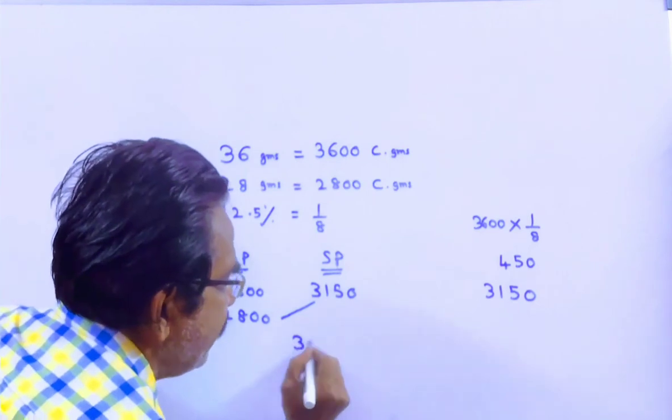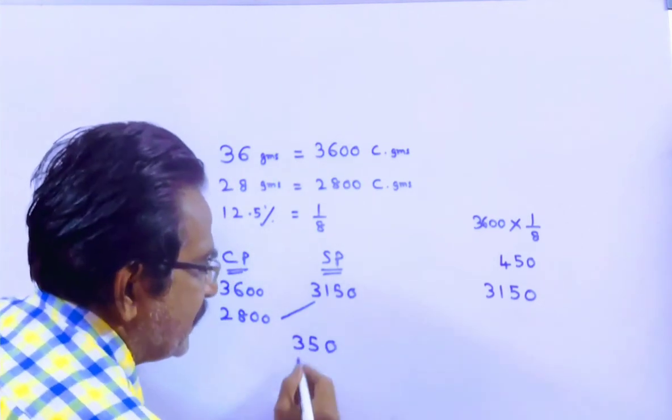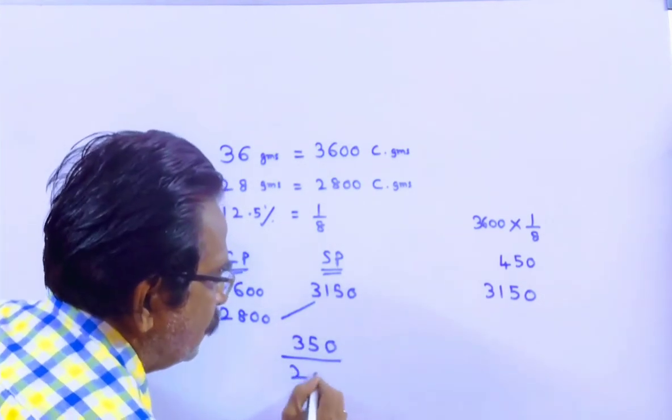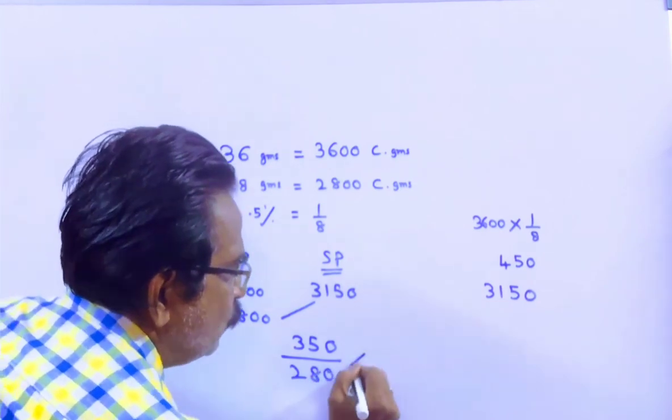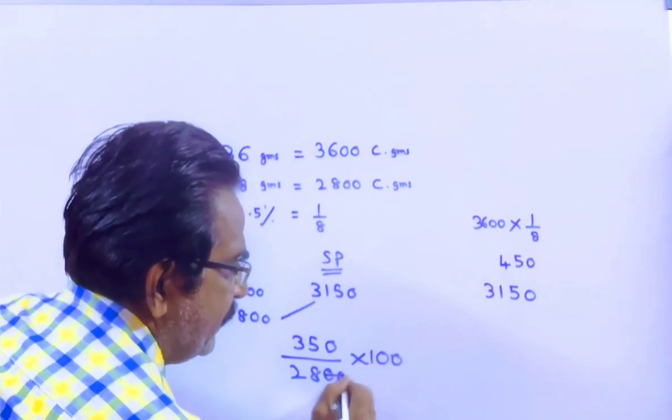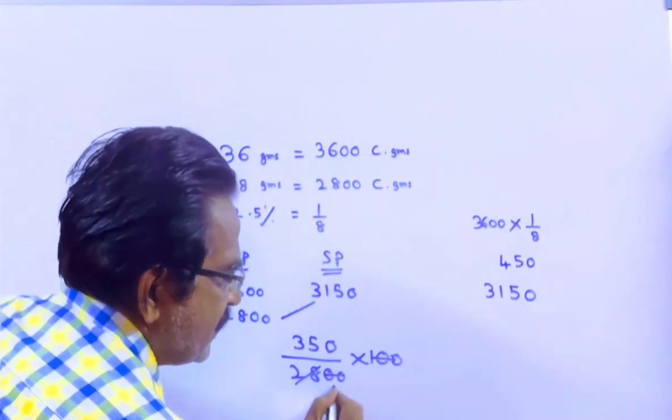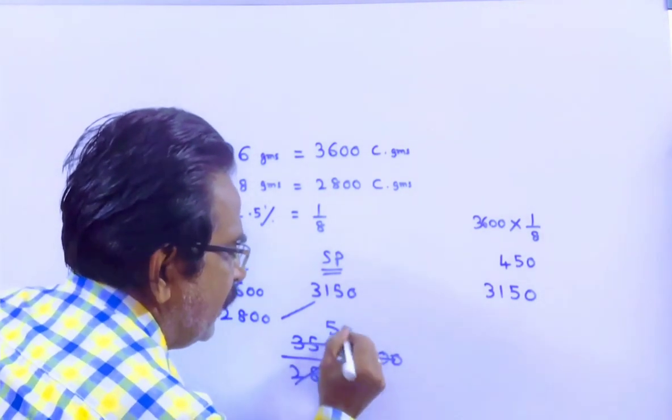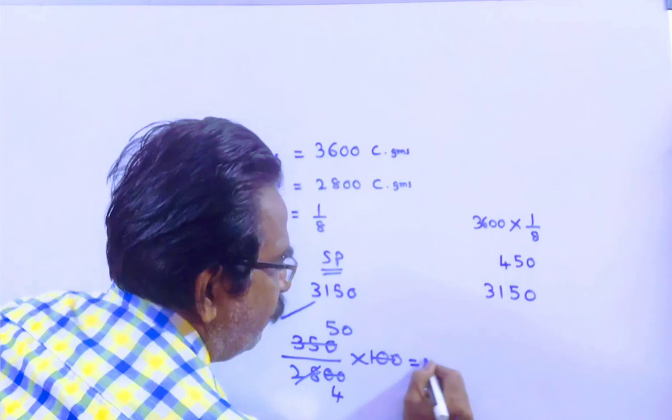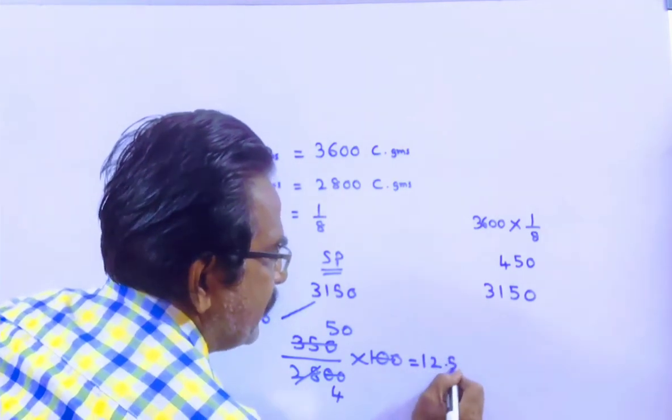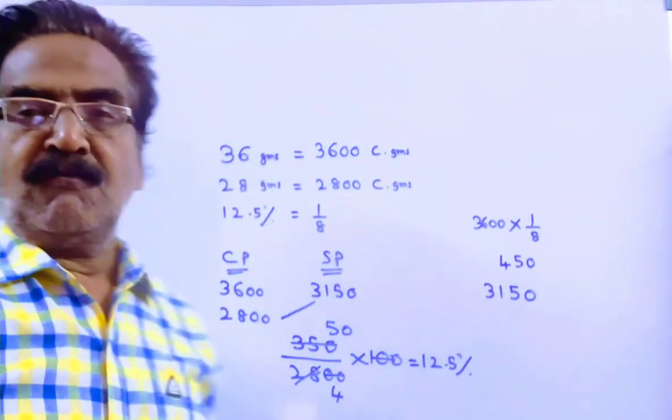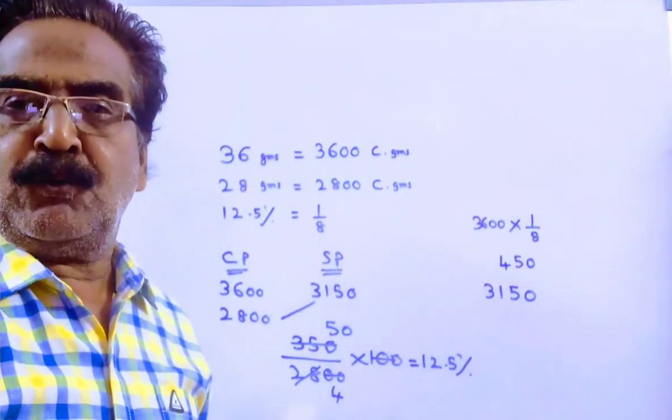350 profit. Profit percent, profit upon 2800 into 100. This comes to 50 by 4, which is equal to 12.5% profit. Thank you.